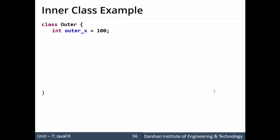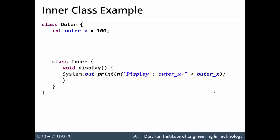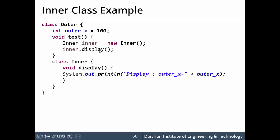A class 'Outer' is defined, within which we declare an integer variable 'outerX' whose value is 100. Then we define an inner class which contains a method 'display'. This display method will display the value of 'outerX', which is declared outside the inner class. We also write a method 'test' within the outer class, in which we create an object of the inner class — 'Inner inner = new Inner()' — and call the display method using 'inner.display()'. This display method will display the value of 'outerX' from the outer class.